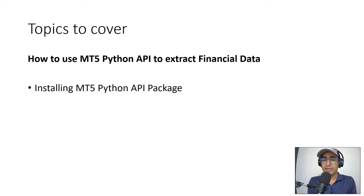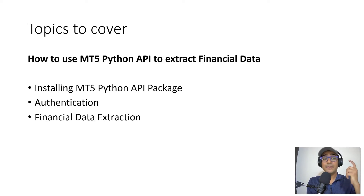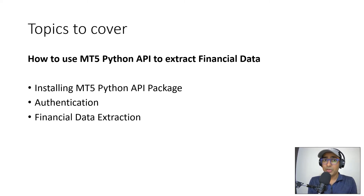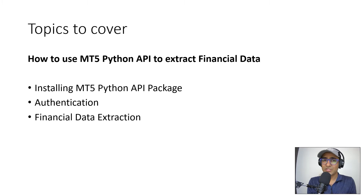The topics we're going to cover in this video: how to use the MT5 Python API to extract financial data. First, we'll install the MT5 Python API package — it's free. Second, we'll authenticate by logging in, integrated with the MT5 platform. We're using IC Markets as our back-end broker, though you can use any other broker as well. Finally, we'll extract financial data in Python from MT5.